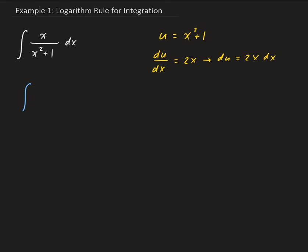So going back to our integral, we have 1 over u and x times dx. It's going to get replaced by 1 half du. Because we have du equals 2x dx, that implies that 1 half du is equal to x times dx.